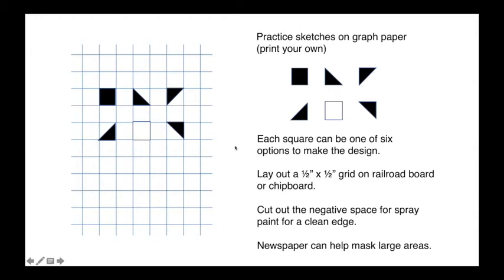Start by either printing some graph paper — there are printable graph paper websites where you can choose different sizes. I recommend a half-inch by half-inch grid for the final layout. For the preliminary layout, you could probably use quarter-inch grid graph paper, just to work with a possible design. Keep in mind there's another constraint — we love constraints in the design process. Each square in your grid must be either full black, one of three triangle options, or full white: six possibilities for each single square.